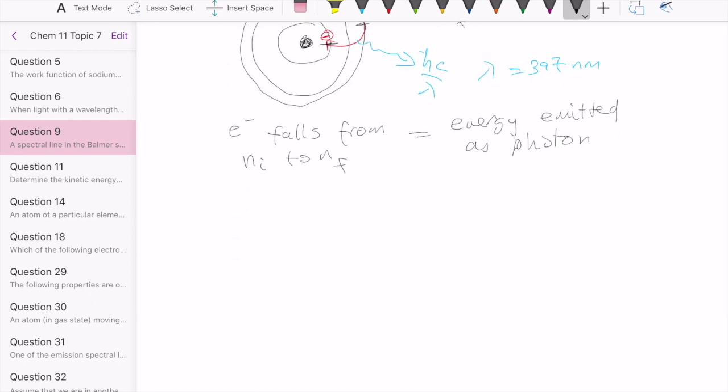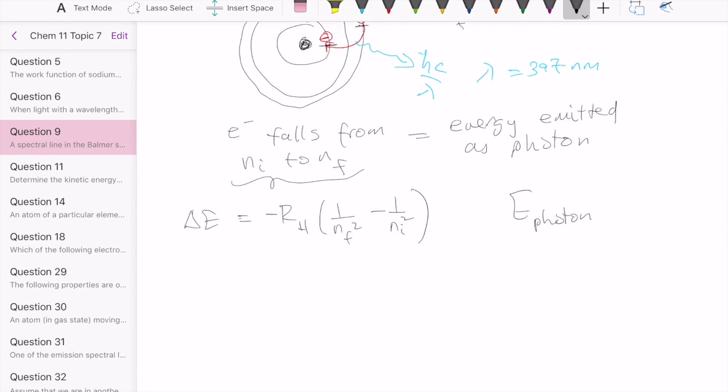And the Bohr equation itself allows you to calculate the energy of the electron that falls from Ni to NF. And remember that that's given as this quantity Delta E and that equation is negative of a constant times one over n final squared minus one over n initial squared. So that is the energy of the electron. The energy of the photon that's emitted can be calculated by the standard H nu or HC over lambda in this case, since we have wavelength.